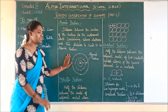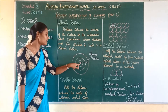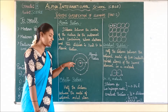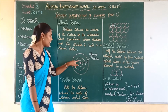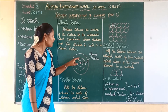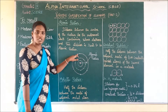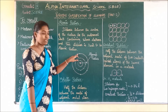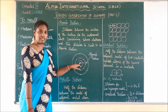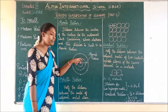Here children, this is the structure of an atom. This is the nucleus, which is present in the centre of the atom. These are the shells and these are the electrons. This is the outermost shell containing the various electrons.